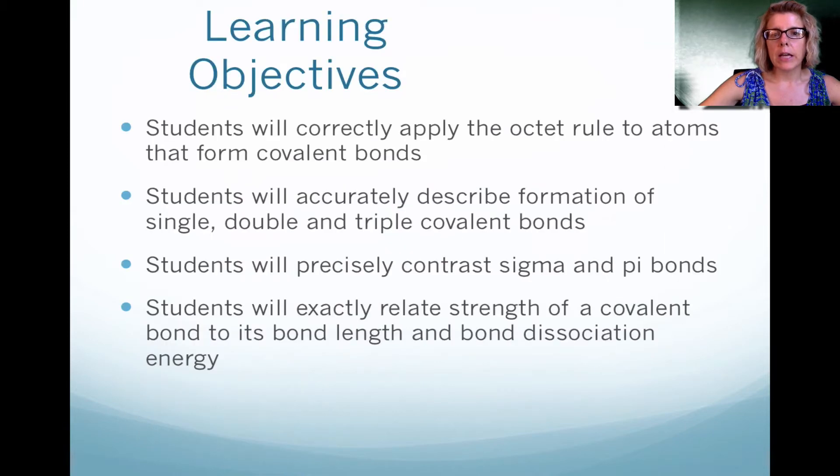In this video, we're going to look at how the octet rule applies to atoms that form covalent bonds, and then we're going to look at single, double, and triple bonds. We'll also look at sigma and pi bonds, and lastly, we'll look at covalent bonds with their length and dissociation energy.